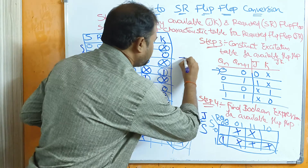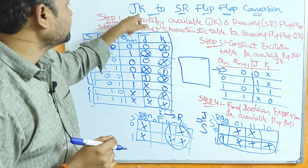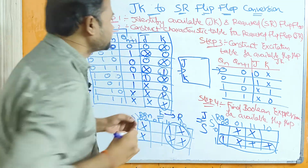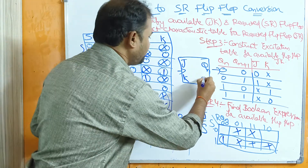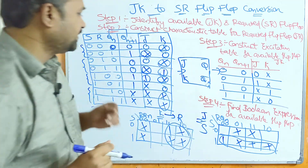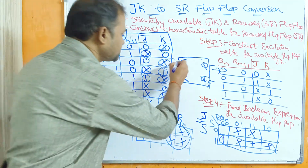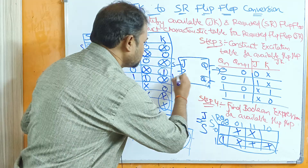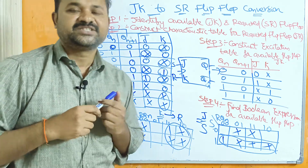The last step is to draw the circuit diagram. Here the inputs are J and K, along with a clock pulse, and the outputs are Q and Q-bar. Since J equals S and K equals R, J will take input from S and K will take input from R. This is the circuit diagram, and in this way we can convert a JK flip-flop to an SR flip-flop.